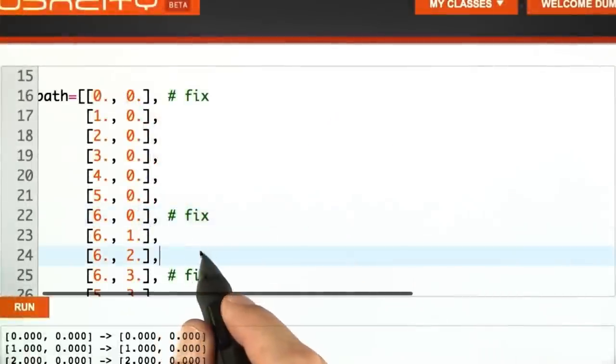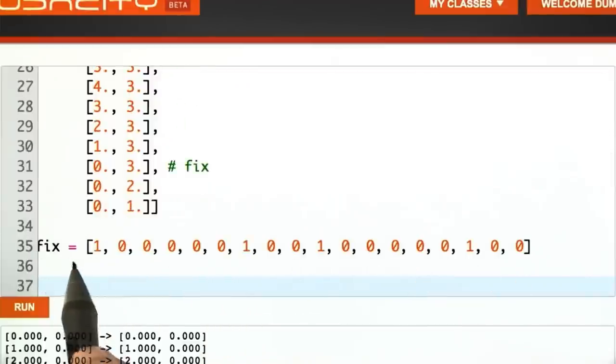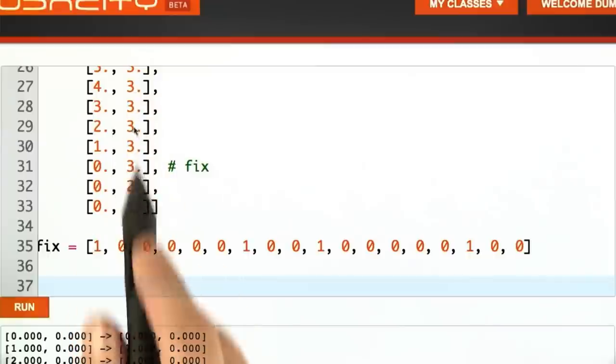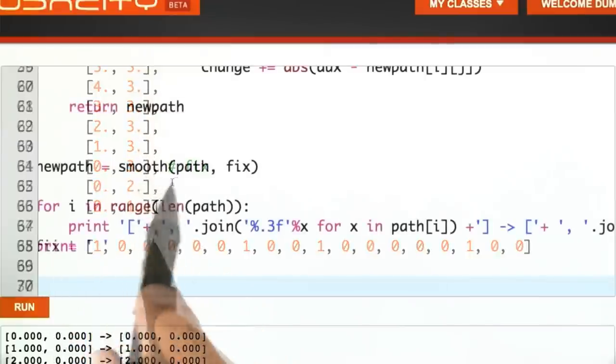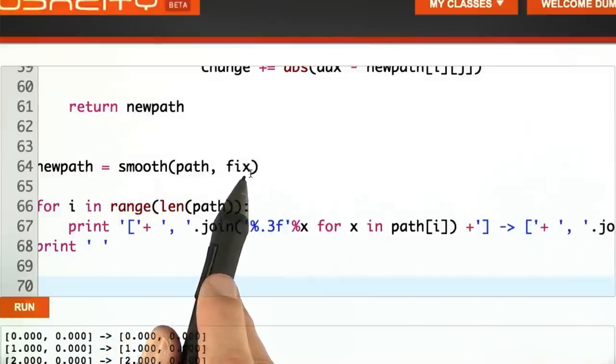The way I indicated this in the code is by giving you a fixed array that looks like this, where each of these numbers corresponds to exactly one data point. There's as many elements in fix as there is in path. And then when I call smooth, I add fix as a parameter.